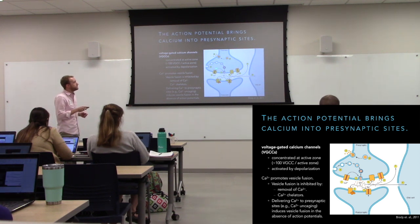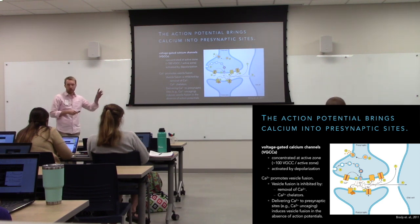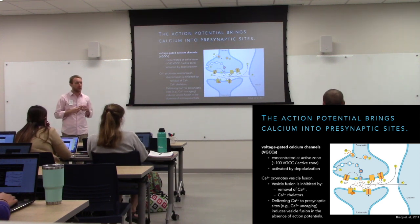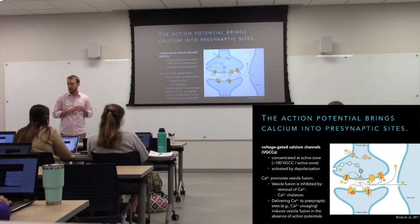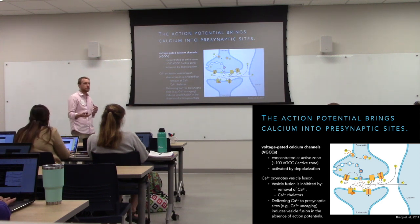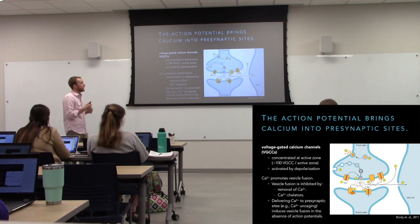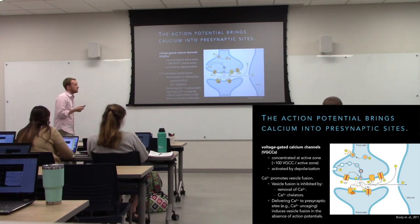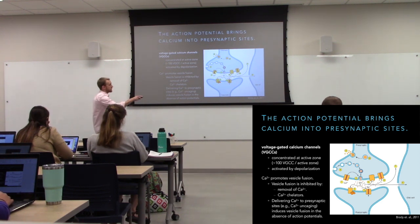Starting at step one — calcium influx. This is the purpose of the action potential: to depolarize the presynaptic terminal enough to open voltage-gated calcium channels. We concentrate these just in the active zone, not scattered along the axon like voltage-gated sodium channels. That depolarization opens calcium channels in active zones to allow local calcium influx that drives neurotransmitter release. This calcium influx drives the fusion of vesicles in our readily releasable pool.